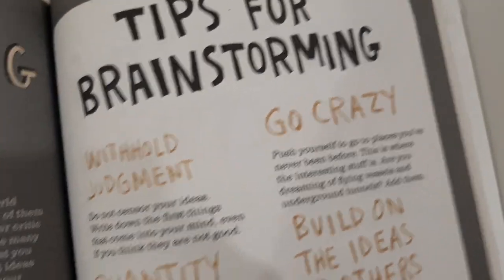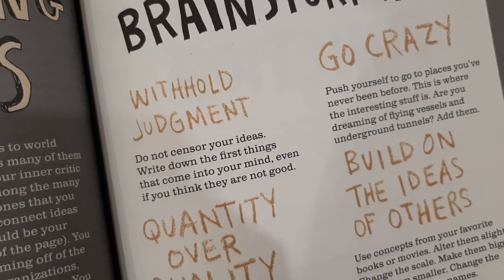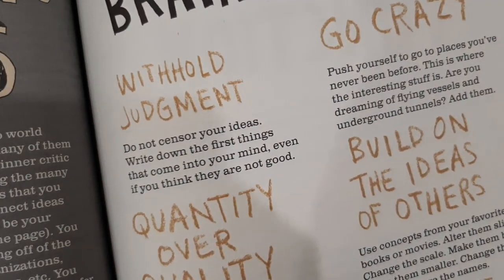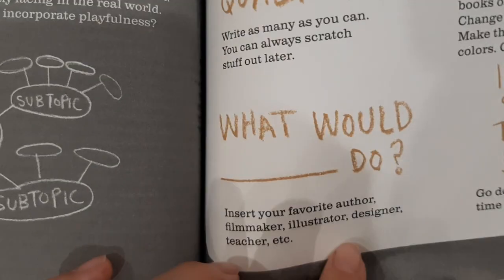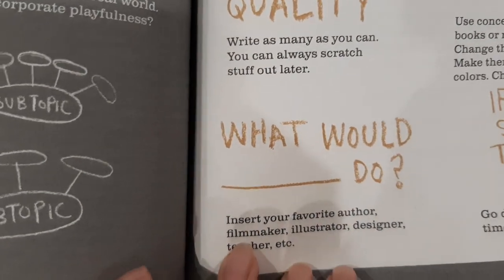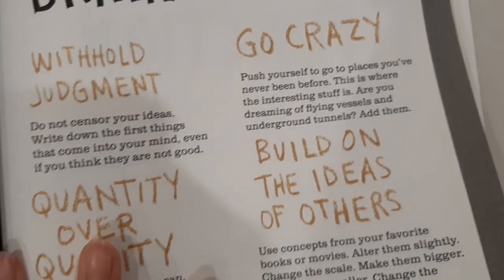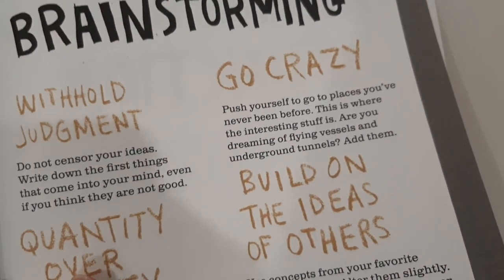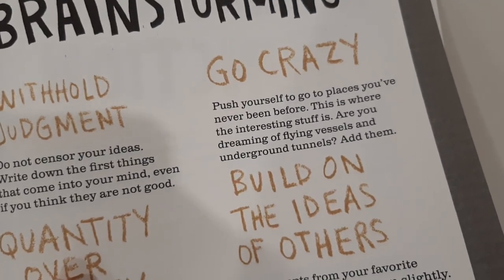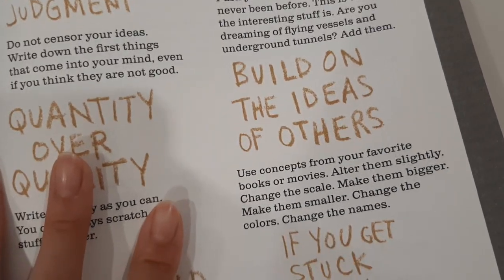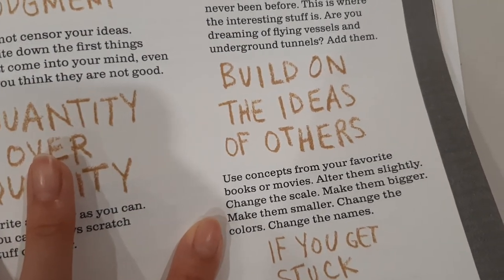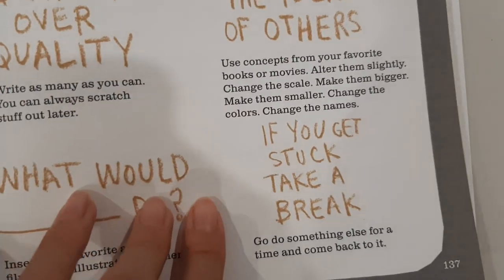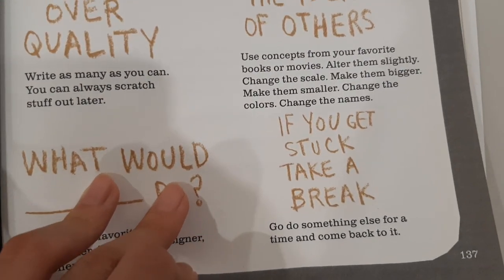Tips for brainstorming. Withhold judgement — do not censor your ideas. Write down the first things that come to your mind even if you think they are not good. Quantity over quality — write as many as you can; you can always scratch stuff out later. 'What would blank do?' — insert your favourite author, filmmaker, illustrator, designer, teacher, etc. Go crazy, push yourself to places you've never been before — this is where interesting stuff is. Are you dreaming of flying vessels and underground tunnels? Add them. Build on the ideas of others; use concepts from your favourite books or movies. Alter them slightly — change the scale, make them bigger or smaller, change the colours, change the names. If you get stuck, take a break, go do something else for a time, and come back to it.